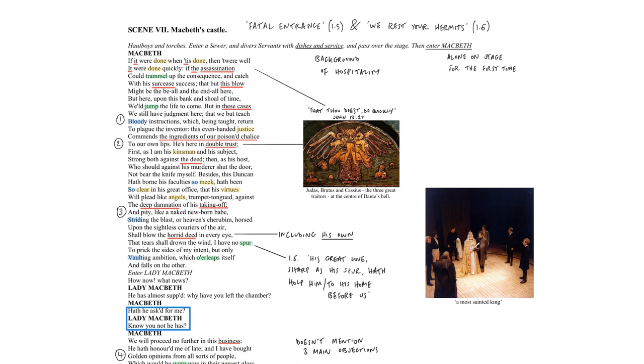Leaping, vaulting, spur, jump and trammel are all part of an extended equine metaphor. One way to think about how that functions in the speech is that Macbeth is, in addition to, worrying about how to restrain the aftermath of the deed, also having to restrain himself, so hold himself back. Remember, these are the three main reasons why he shouldn't go ahead with the murder. And yet, despite them, he still feels this surge of ambition.